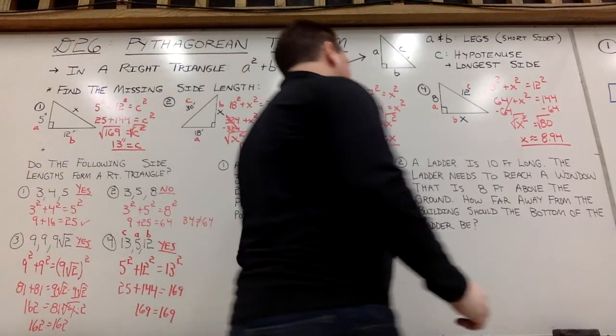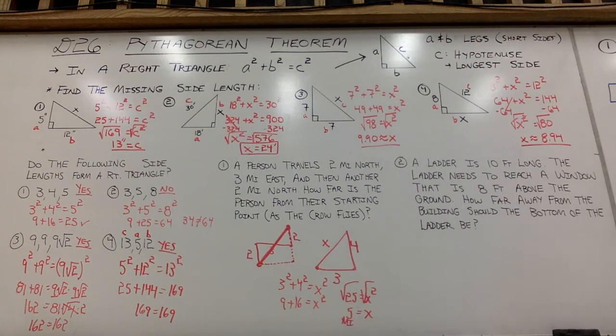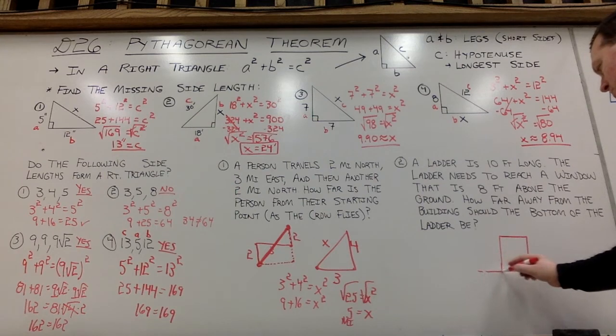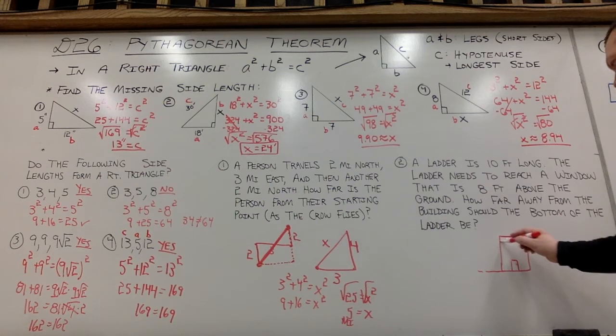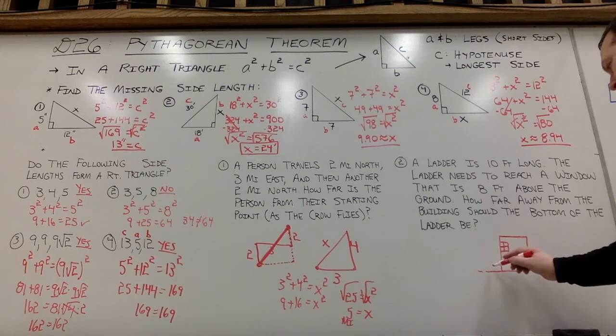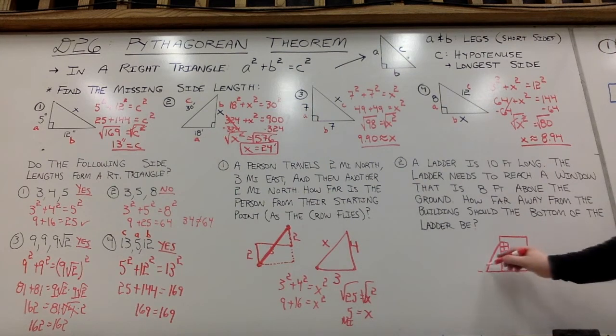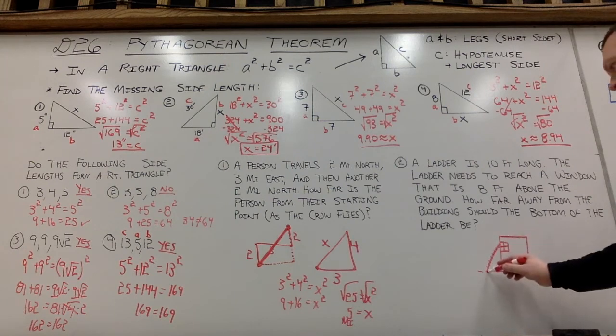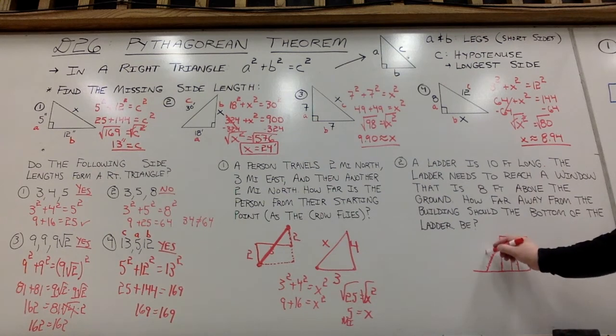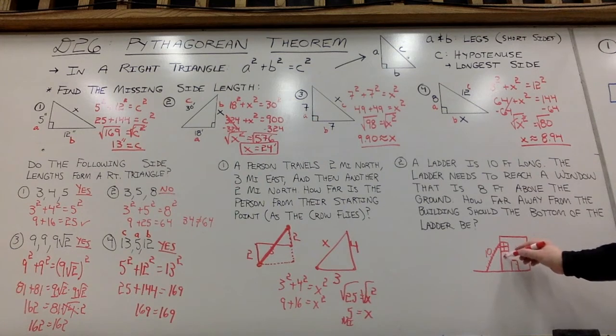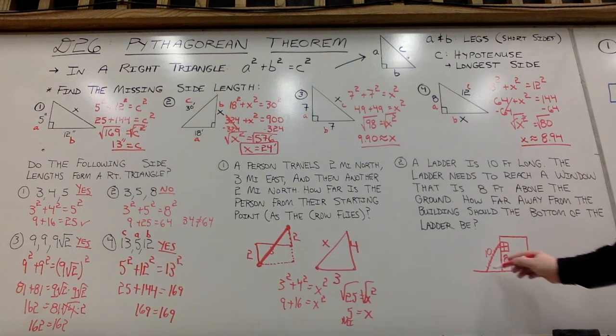All right, our last one here. We've got a ladder that is 10 feet long, and it needs to reach a window that is 8 feet above the ground. So here's my little house. I've got a window. How's that for a ladder? I hope it's good. So my ladder here is 10 feet long.